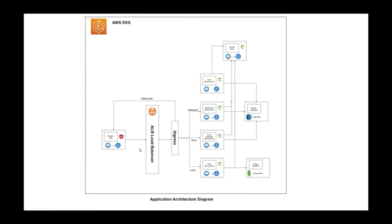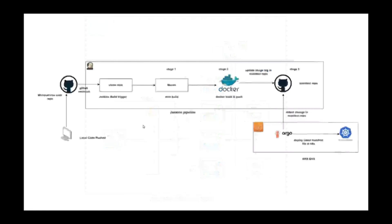For containerization we have used Docker and Kubernetes, and to deploy the whole application we have used AWS and multiple AWS services. We have used both SQL and NoSQL — that is MongoDB — with RDS on AWS. The architecture uses Angular as front end, microservices as back end, ALB load balancers, and Ingress for routing. The CI/CD pipeline uses Jenkins and Argo CD to push code from local to GitHub, build the pipeline, and deploy to AWS EKS.